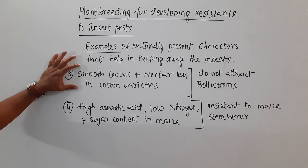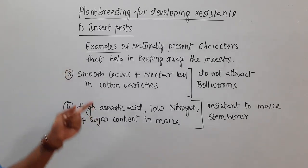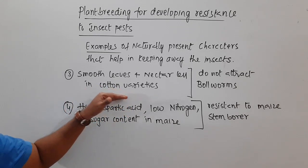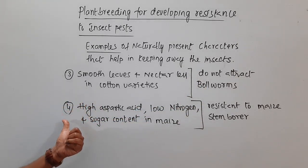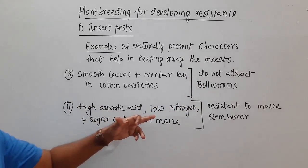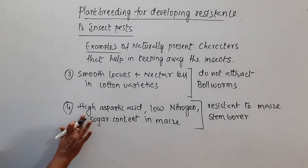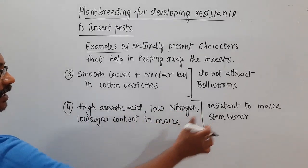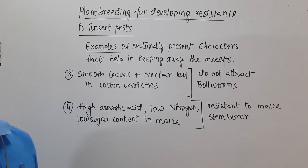In another case, there is the presence of smooth leaves and nectarless flowers in cotton varieties. If the leaves are smooth and the flowers are nectarless, they will not attract bollworms. Another character is the presence of high aspartic acid, low nitrogen, and low sugar content. Low sugar content in maize will actually help give resistance to maize stem borers. These are some characters present in plants that help in resisting insects.